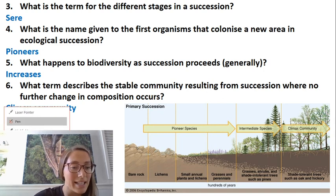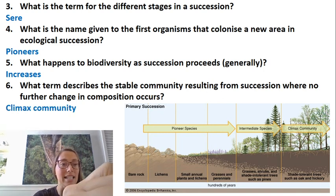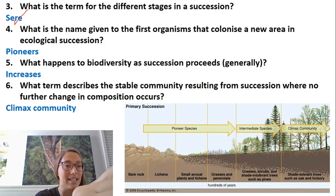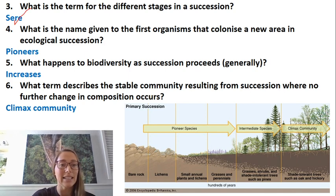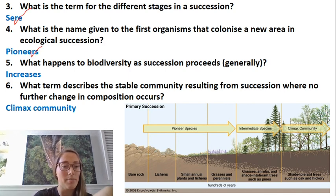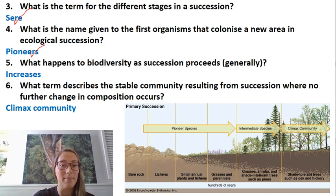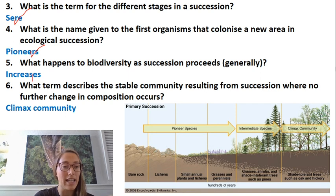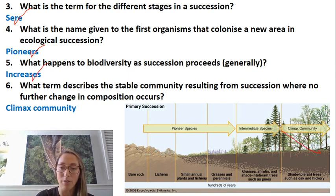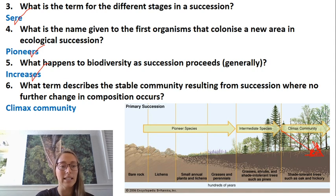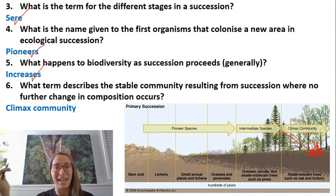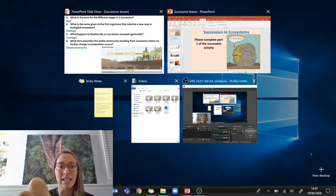A couple of other key terms: the different stages in succession are called seres, and the first organisms are pioneer species. Biodiversity generally increases through succession but, as mentioned, decreases a little when we reach the climax community. The stable community at the end of succession is called the climax community.